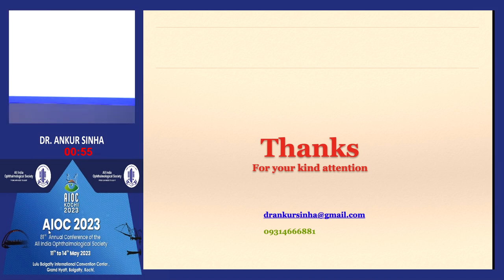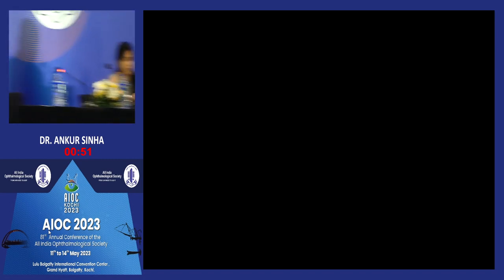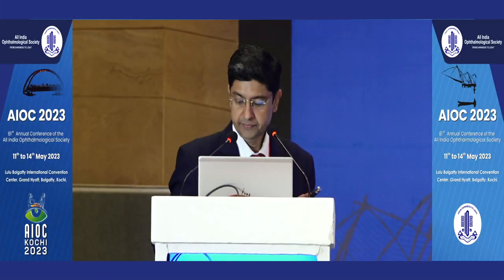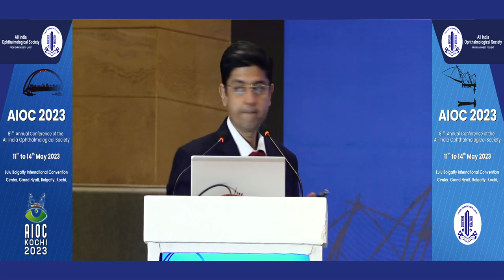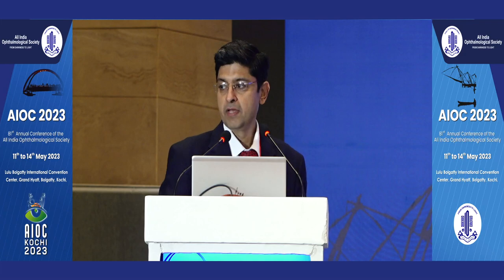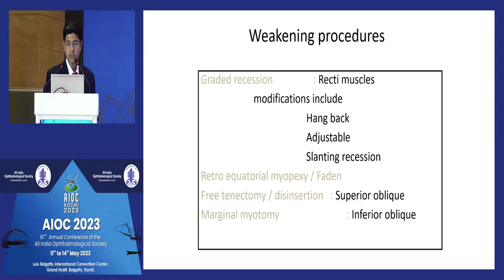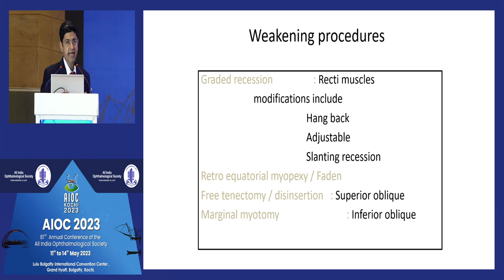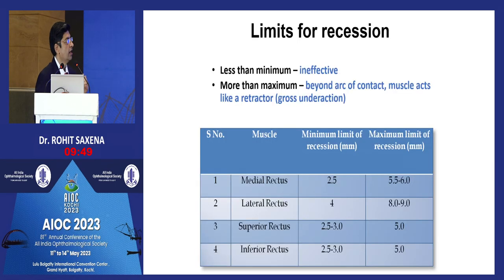We will now go on to videos. Graded recessions of the recti are the most commonly done procedures. For inferior and superior obliques, free tenectomies, tenotomies, and myectomies are not preferred — any procedure should be graded so you know your own dose-response curve. Know the anatomy well and be aware of associated anomalies. Avoid over-recessions.